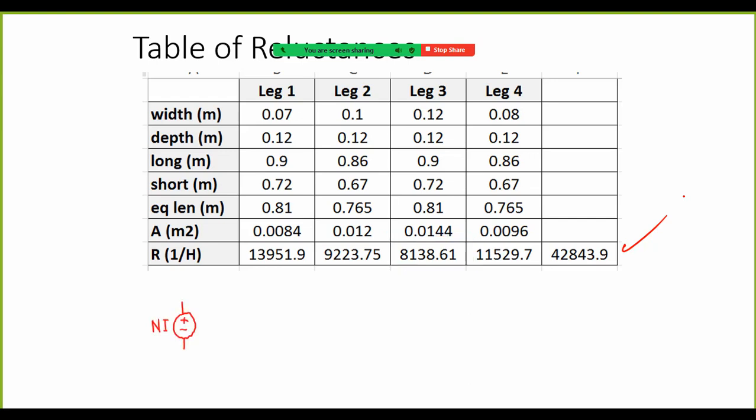I draw the equivalent circuit. My coil I represent with a voltage source with the value N I, and each one of the segments I represent with the corresponding reluctance. They are in series. By all means, this is a linear equivalent circuit. We can use the simplifications that we've learned in electric circuits, and you put them in series or in parallel—that works too under the assumption of constant permeability.